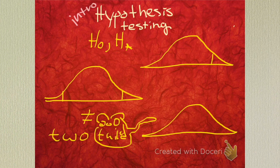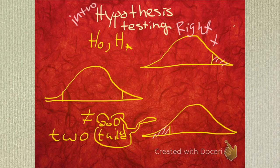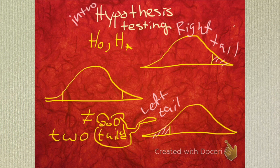These are one-tailed tests. That's a right-tailed test. And then this one is a left-tailed test. A left-tailed test. So this one's right and then left-tail. Those are two tests.